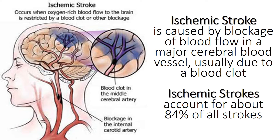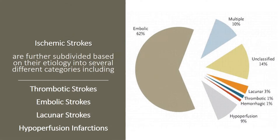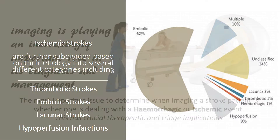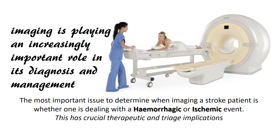Ischemic strokes account for about 84% of all strokes. Ischemic strokes are further subdivided based on their etiology into several different categories including thrombotic strokes, embolic strokes, lacunar strokes, and hypoperfusion infarctions. Imaging is playing an increasingly important role in diagnosis and management. The most important issue to determine when imaging a stroke patient is whether one is dealing with a hemorrhagic or ischemic event.